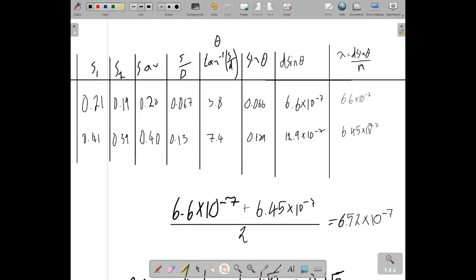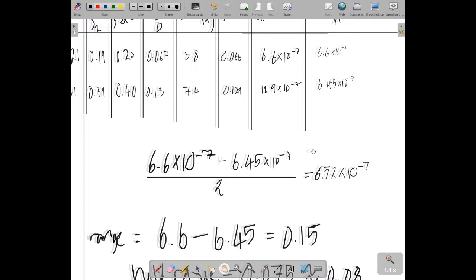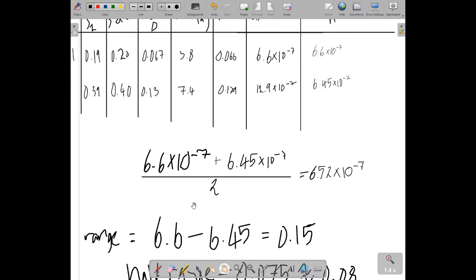So I've got two values now for the wavelength of light. So what I could do then, they should be the same. They're not. That's just experimental problems.